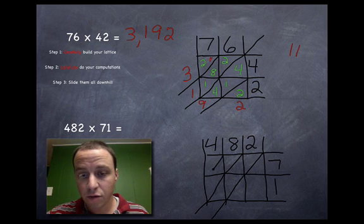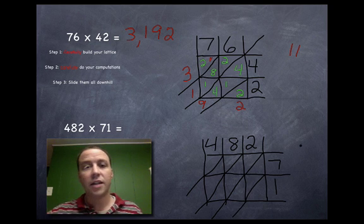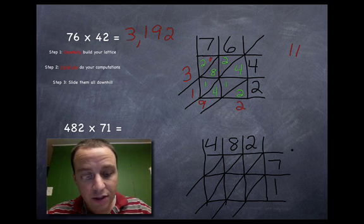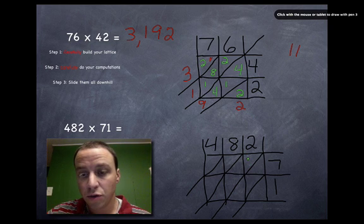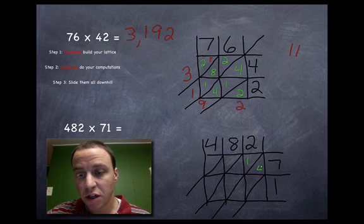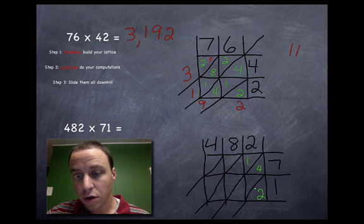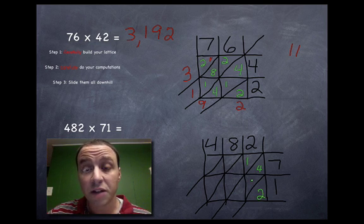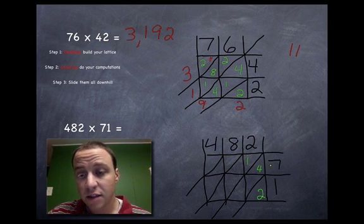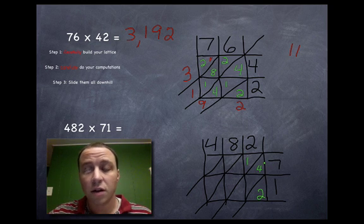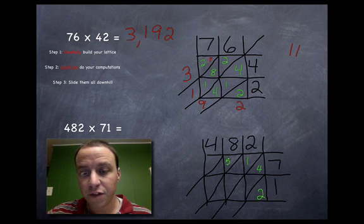And now here's the hard part: corner to corner to corner and beyond, corner to corner to corner and beyond, corner to corner and beyond. All right, the lattice is built. Let's do some computations. Two times seven is fourteen, two times one is two. So there doesn't always have to be a tens place. Eight times seven—this is the hard one.